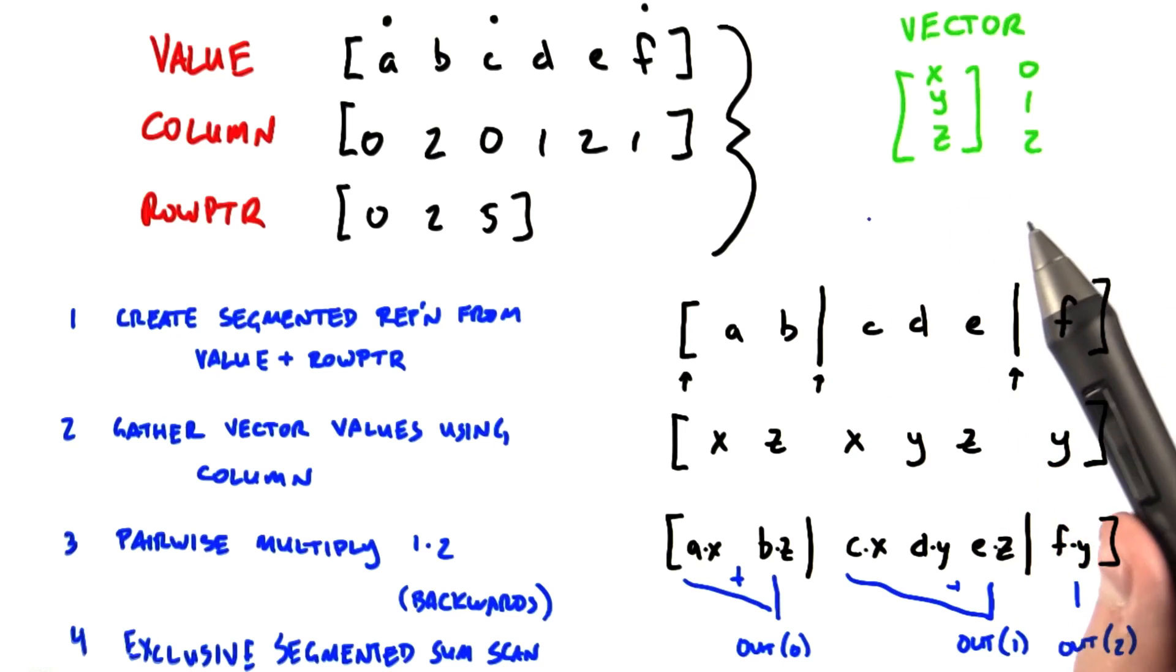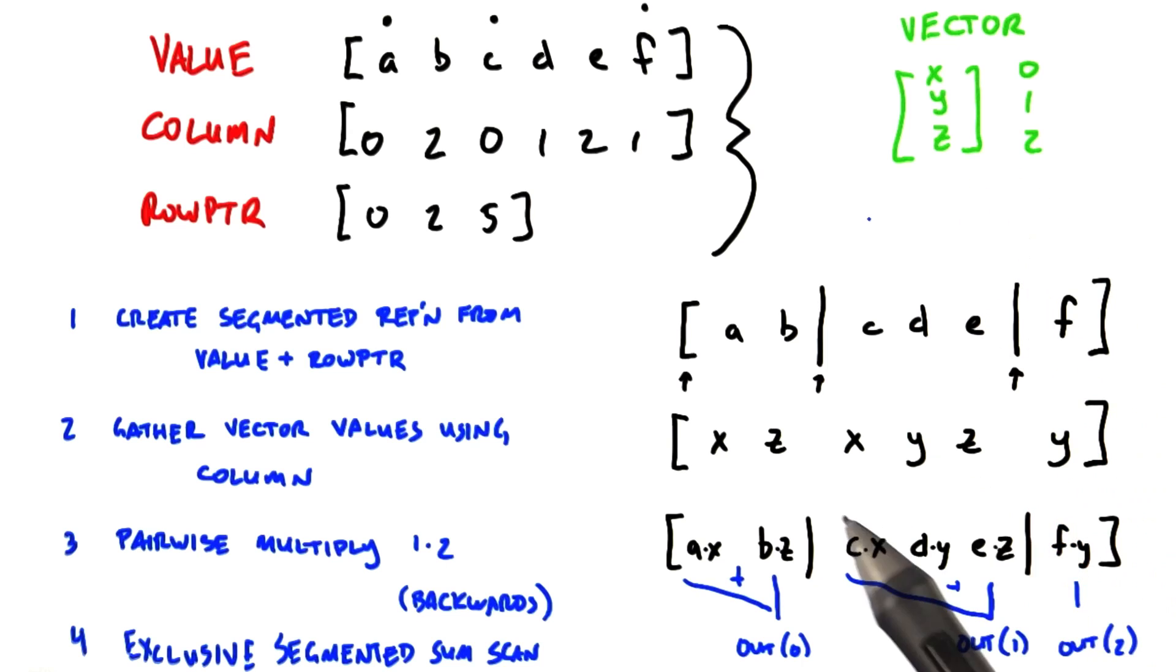We need to do an exclusive segmented sum scan to sum up each segment of partial products. It's actually a little bit more convenient to do a backwards exclusive segmented sum scan, so the sums instead end up at the head of each segment, since then the row pointer array can be used to gather those per-row sums into a dense vector.